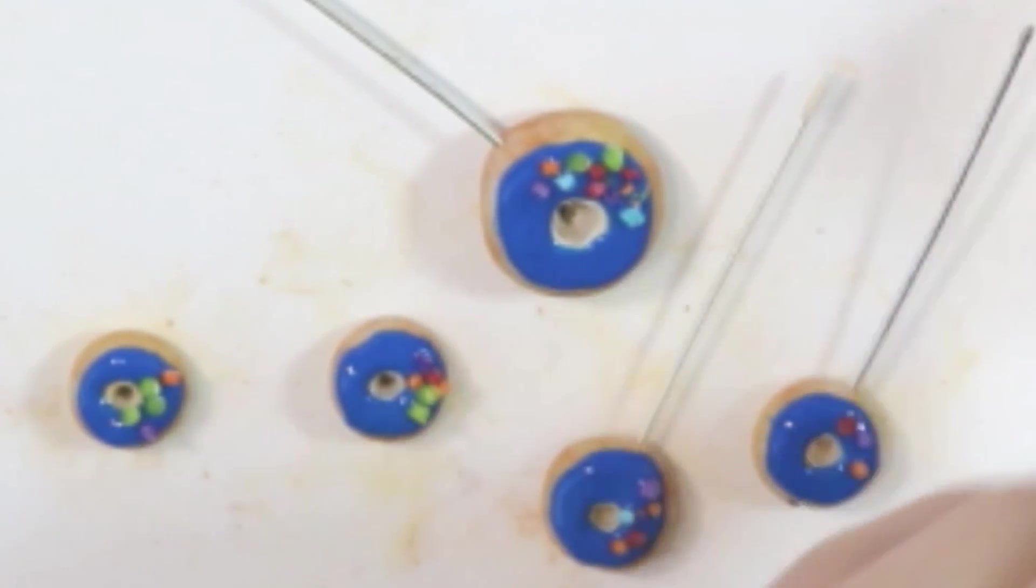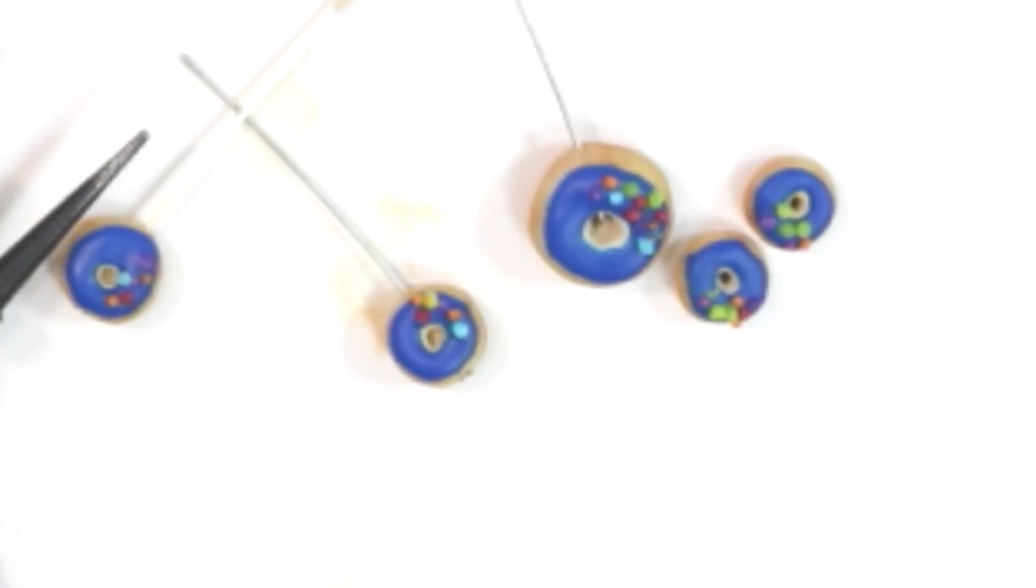After that you're going to bake it according to your clay's instructions. I use Fimo to give you an idea of temperatures. Once it's cool to the touch we're going to make these into jewelry.